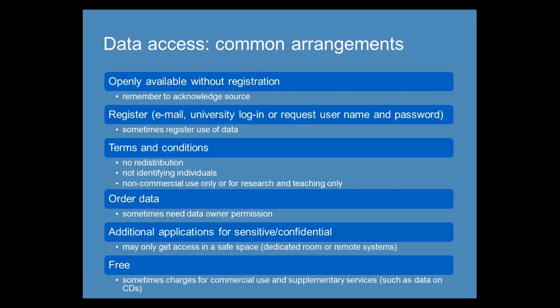Some arrangements in place across data services: First, some services support access to open data collections which can be downloaded by any user without registration. Normally you need to register with data services before accessing data. University researchers may register using their institutional details such as username and password; otherwise you need to provide an email address and possibly institutional details, and may need to wait to receive a username and password. In some cases you may also be asked to register the use of data, which helps data creators and services understand how data is being used.